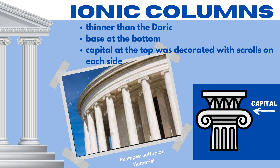The middle-of-the-road columns are the Ionic columns. Ionic columns are similar to Doric columns but much thinner. The base at the bottom was simple like the Doric column, but in an Ionic column the capital at the top was decorated with scrolls on each side. Where can we see this in today's world? In eighth grade you'll go on a school trip to Washington, D.C. One of the memorials you'll visit is the Jefferson Memorial — take a look at the Ionic columns that decorate it. This is a throwback to ancient Greece and one way we see it in today's world.